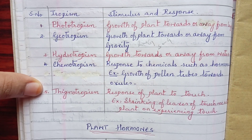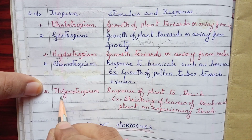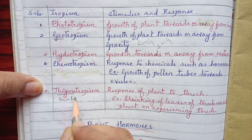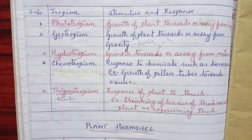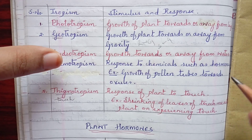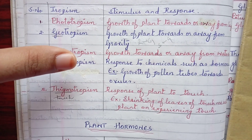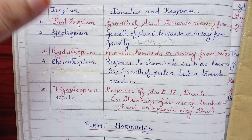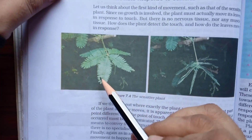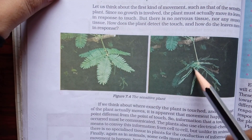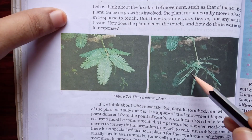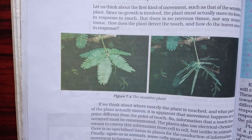The next one is thigmotropism. 'Thigmo' refers to touch, so this is the response of the plant to touch — a very sudden and rapid response. The example is the shrinking of the touch-me-not plant, also known as Mimosa pudica. When you touch its leaves, they close up immediately.